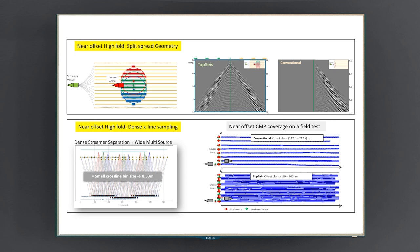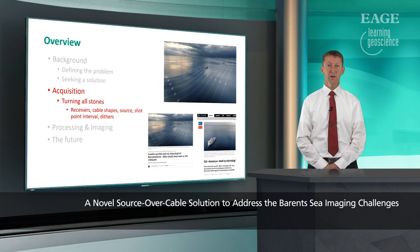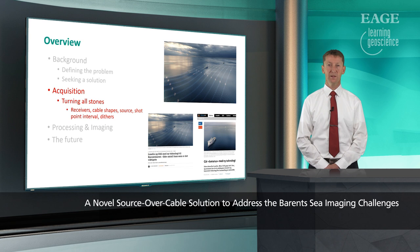Based on all these learnings, we decided to pursue a different type of marine acquisition setup where we place the sources in the middle of all the streamers. Instead of having the sources in front and the streamers behind, we move the sources on top of all the streamers. This way we capture split-spread marine gathers for the first time ever, also getting full near-offset data and very small crossline bin sizes. We used this setup in a large acquisition project in the Barents Sea in 2017.